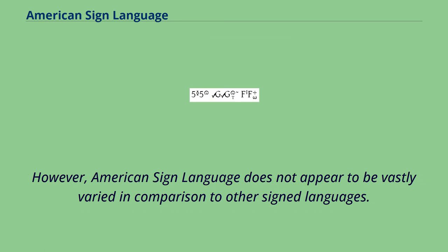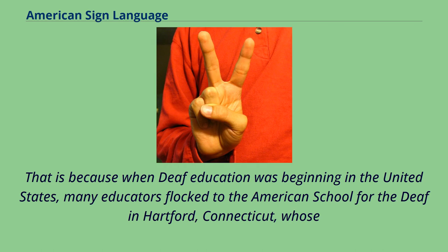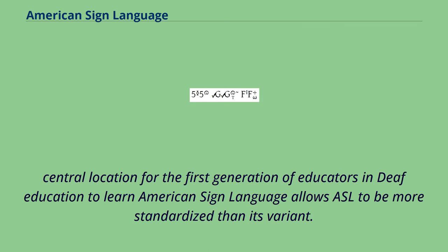However, American Sign Language does not appear to be vastly varied in comparison to other sign languages. That is because when deaf education was beginning in the United States, many educators flocked to the American School for the Deaf in Hartford, Connecticut, whose central location for the first generation of educators in deaf education allowed ASL to be more standardized than its variants.